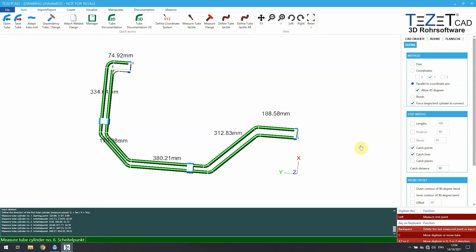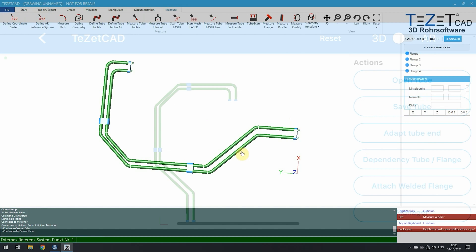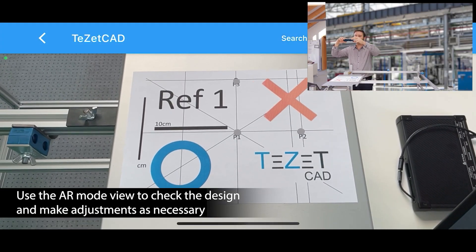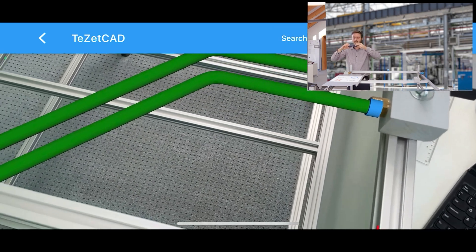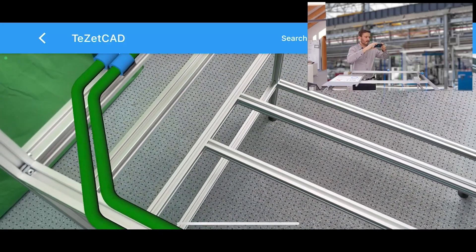After designing the pipes virtually with a probing system, the Augmented Reality function gives you an overview of the complete project. All created pipes are added into the camera viewer in full 3D mode, so that the complete design work can be visually inspected and, if need be, adjusted, taking potential obstacles fully into account.